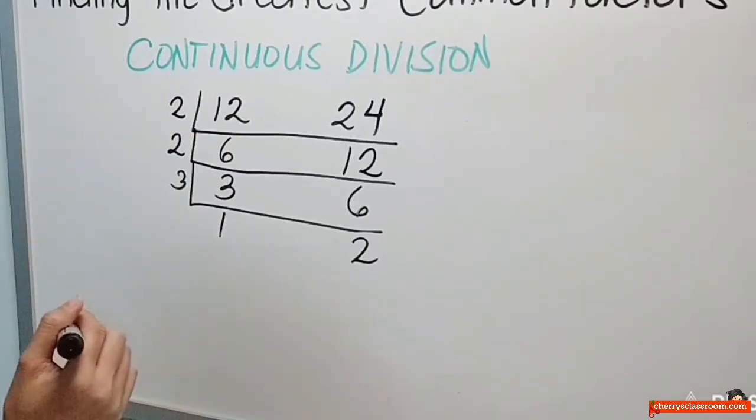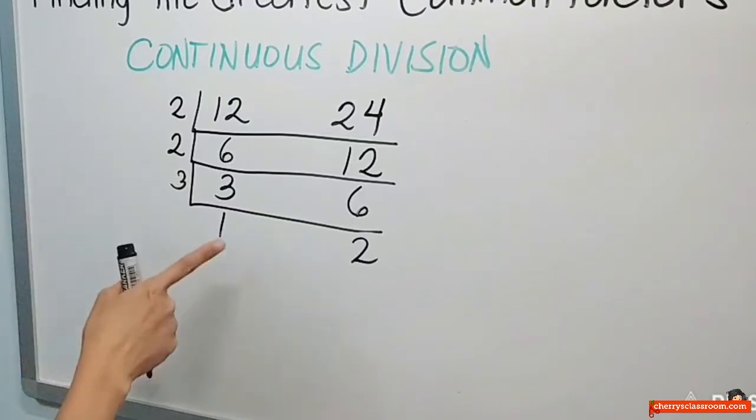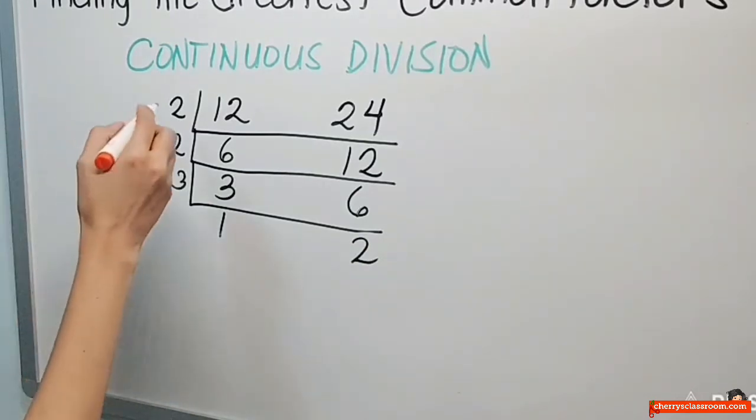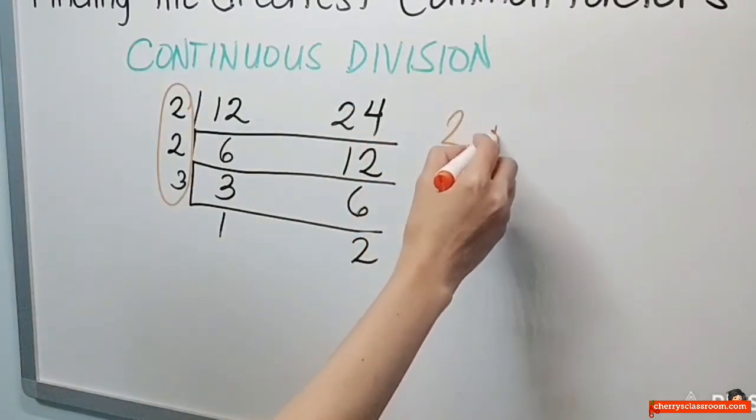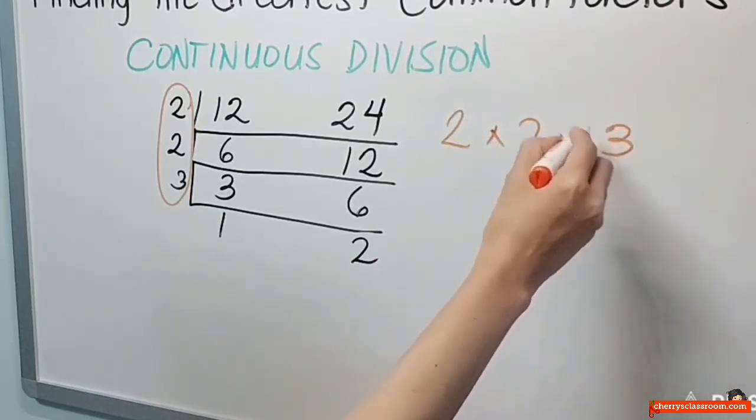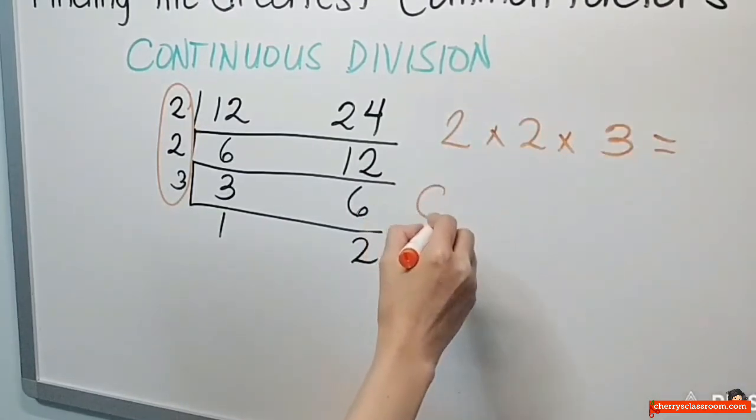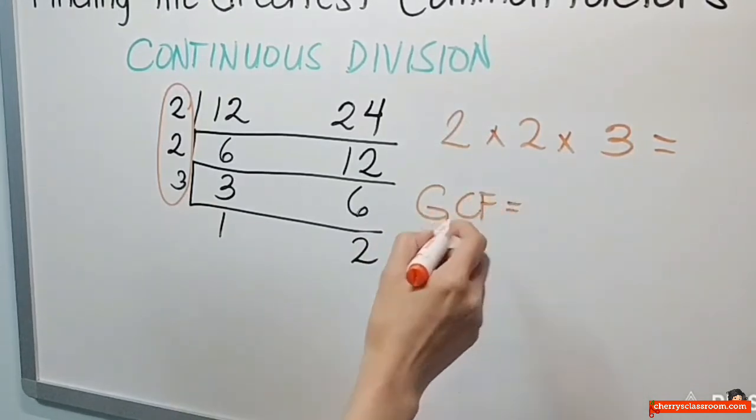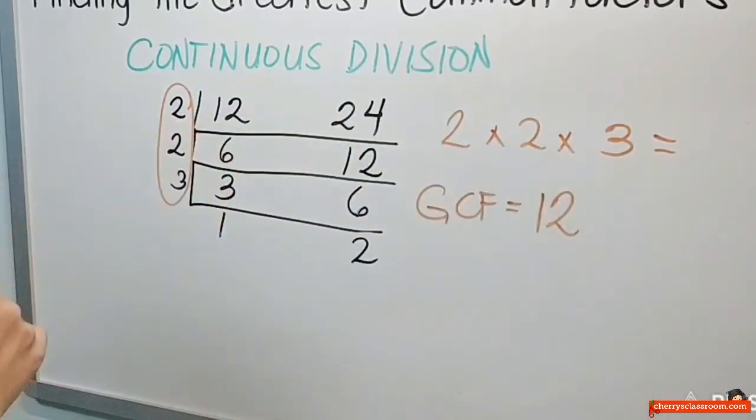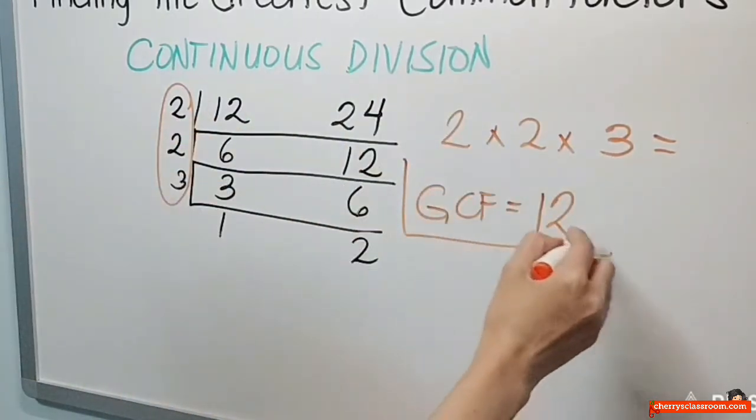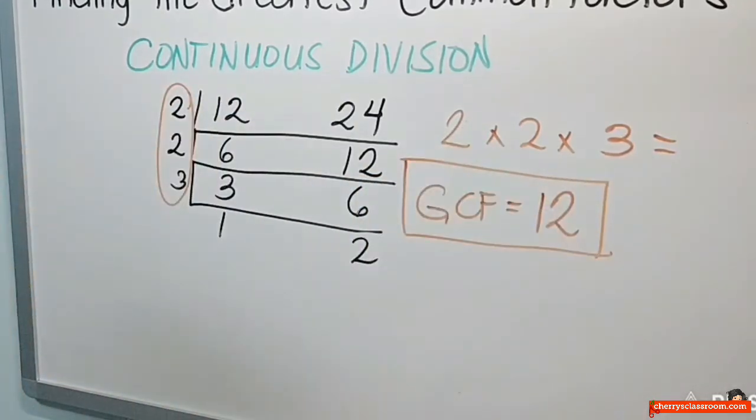Now, meron pa ba akong number maliban sa 1 na pwedeng i-divide, prime number na pwedeng i-divide sa 1 at the same time pwedeng i-divide sa 2? Wala na po. So, ang lahat ng number na pinang-divide mo ngayon, ang masagilid ay ililista mo. So, 2 times 2 times 3. Ang sagot niyan ay ang iyong GCF. 2 times 2, 4 times 3, 12. So, ganun pa rin. GCF ng 12 at 24 ay 12.